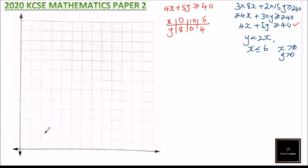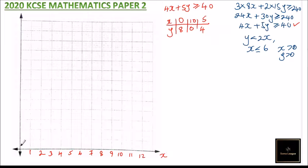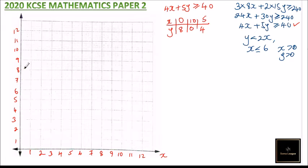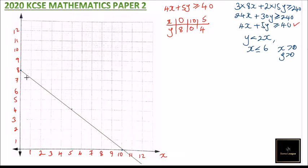We label our Cartesian plane with X and Y axes, marking values from 1 to 12 on both axes. Using our table of values — (0, 8), (10, 0), and (5, 4) — we plot the three points and join them to form the line representing 4X + 5Y = 40.